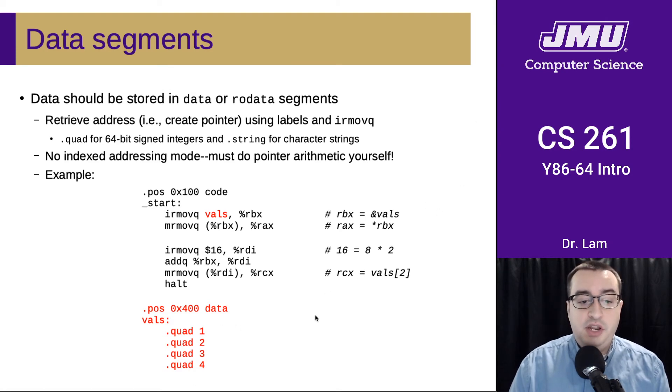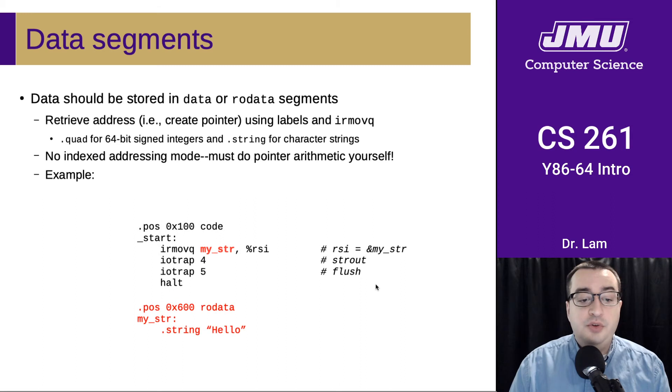So that's an example of an integer array, we can also store string data, we recommend storing the string data in the read only data segment. And this is generally basically just for output. So the string out IO trap.